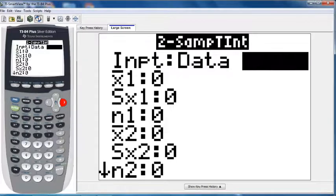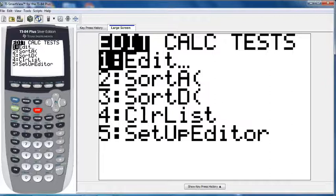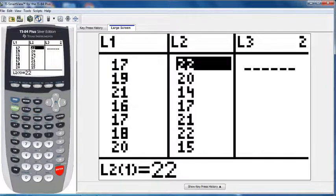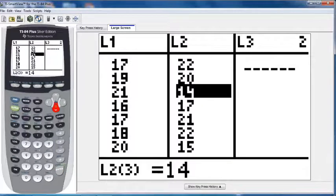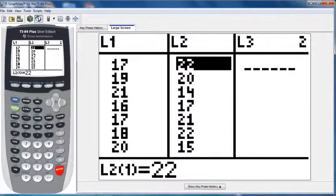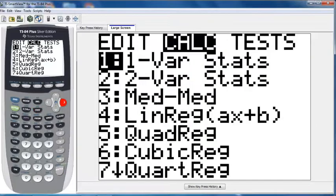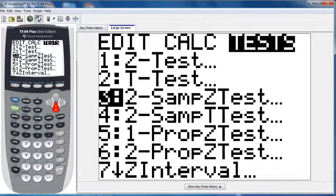Then, for example, we could do stat, calc, one variable statistics on each data set and then the calculator would tell us what the sample mean is, what the sample standard deviation is for each group. So I've actually already entered the data into the calculator here. If I go to stat, edit, there's L1, there's L2. You should recognize that. Those are the chips Ahoy cookies. Those are the great value cookies. So you've got your data entered into L1 and L2.